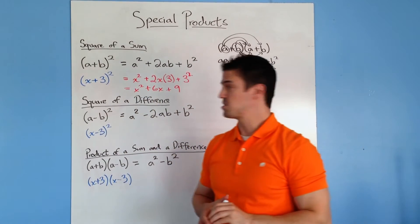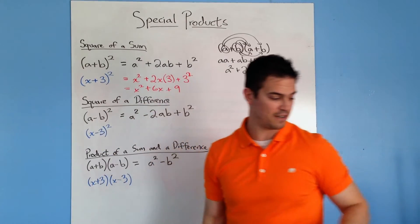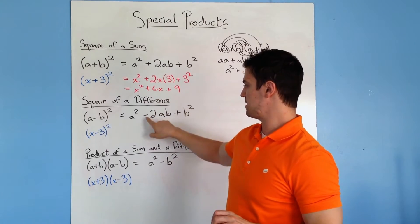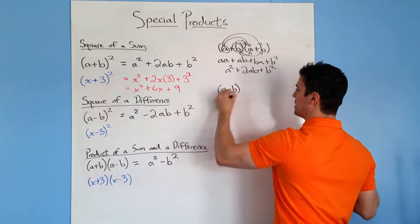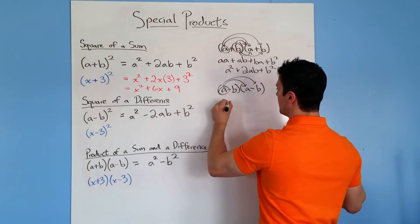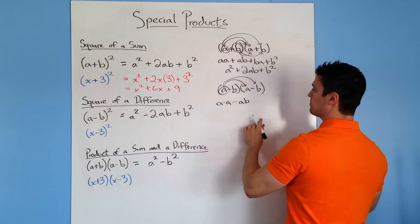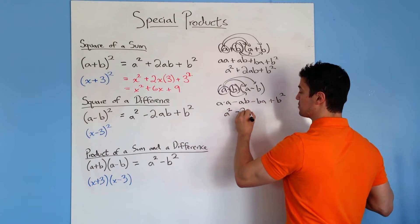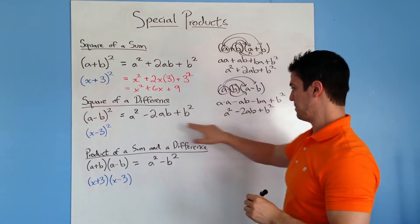So that's the square of a sum. Next we have a square of a difference. And it follows the exact same rule, only instead of having a plus here, it ends up being a minus. Because... which is the same as what we have right here.